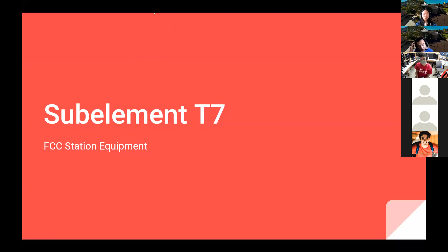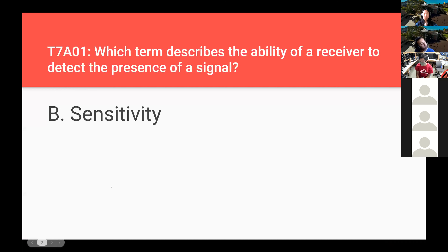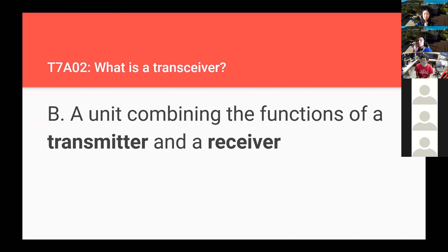Now moving on to sub-element T7, station equipment. Which term describes the ability of a receiver to detect the presence of a signal? Sensitivity. A transceiver is a unit combining the functions of a transmitter and receiver — hence the name transceiver.